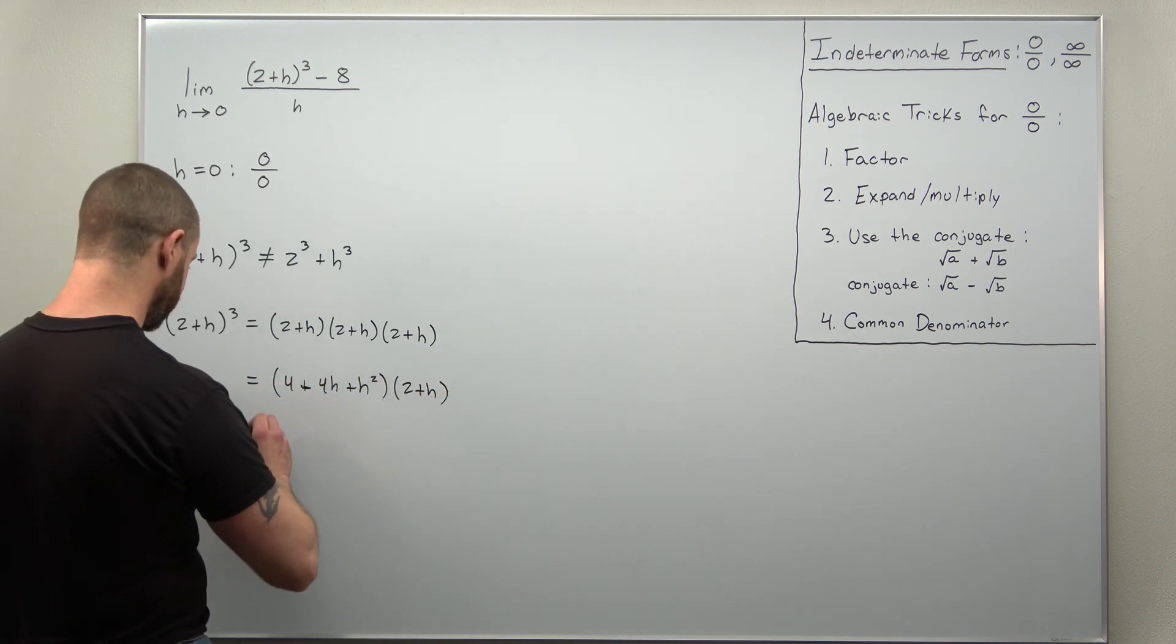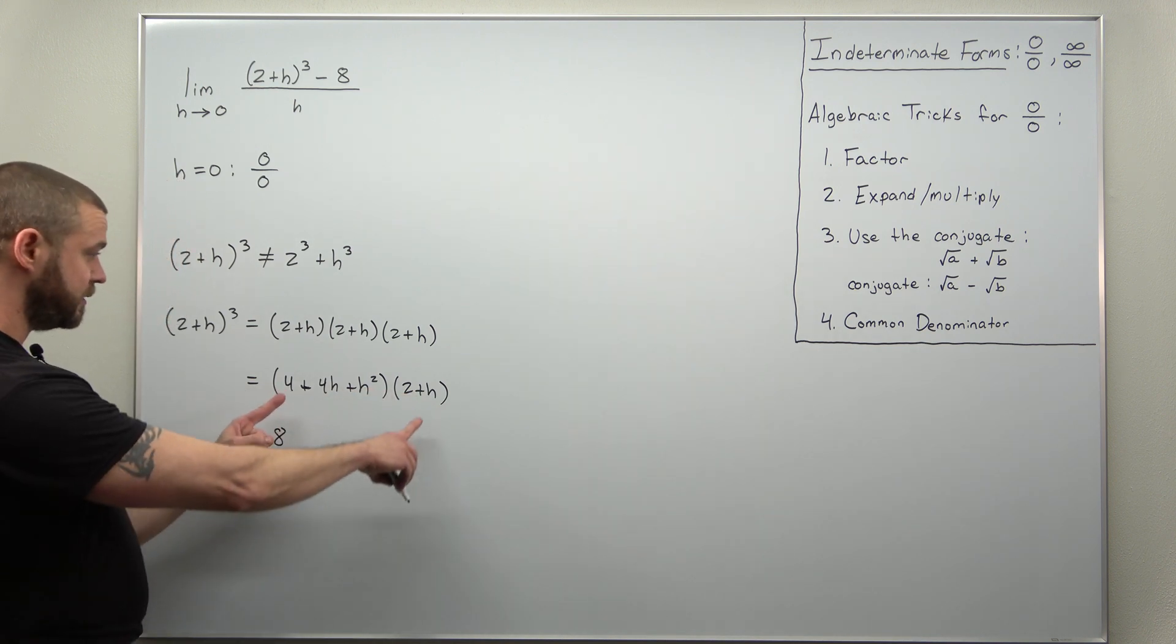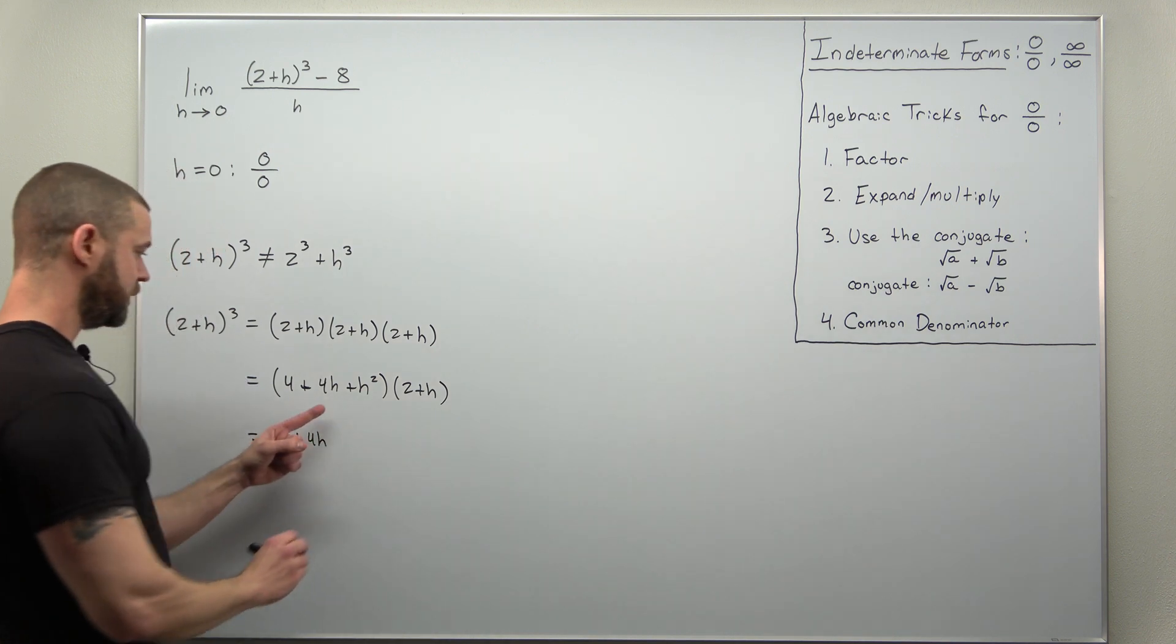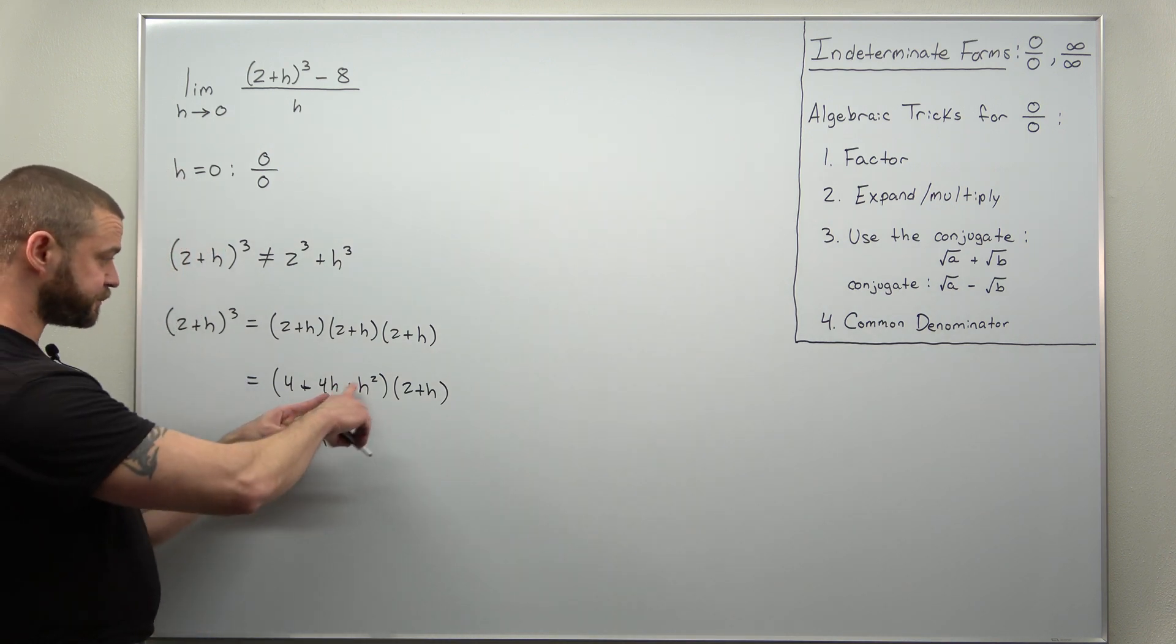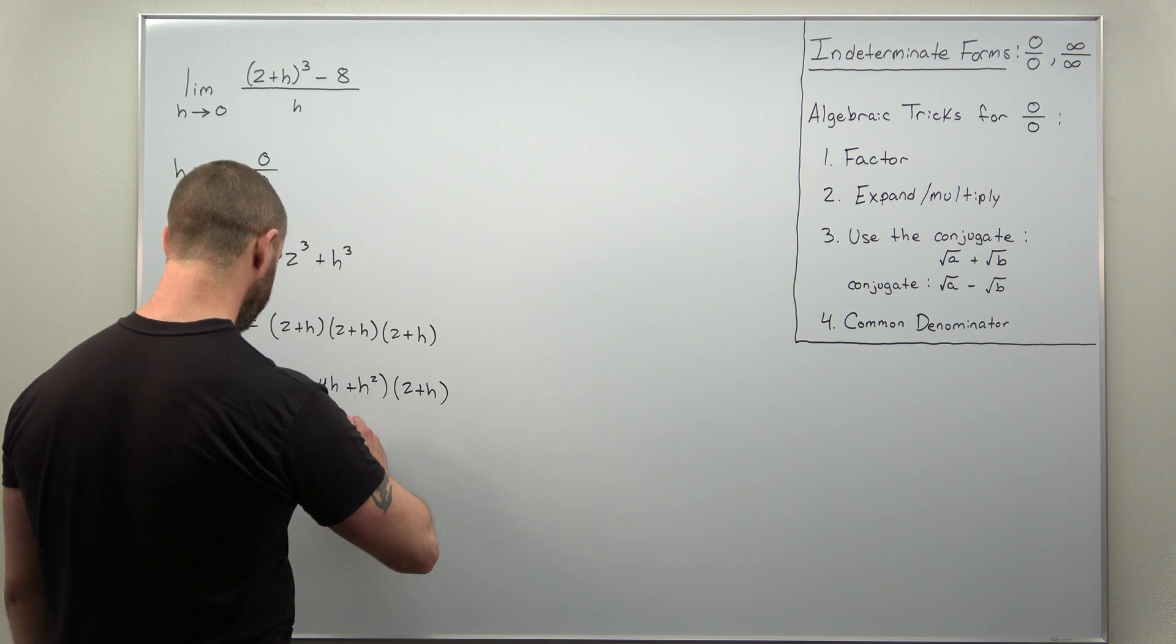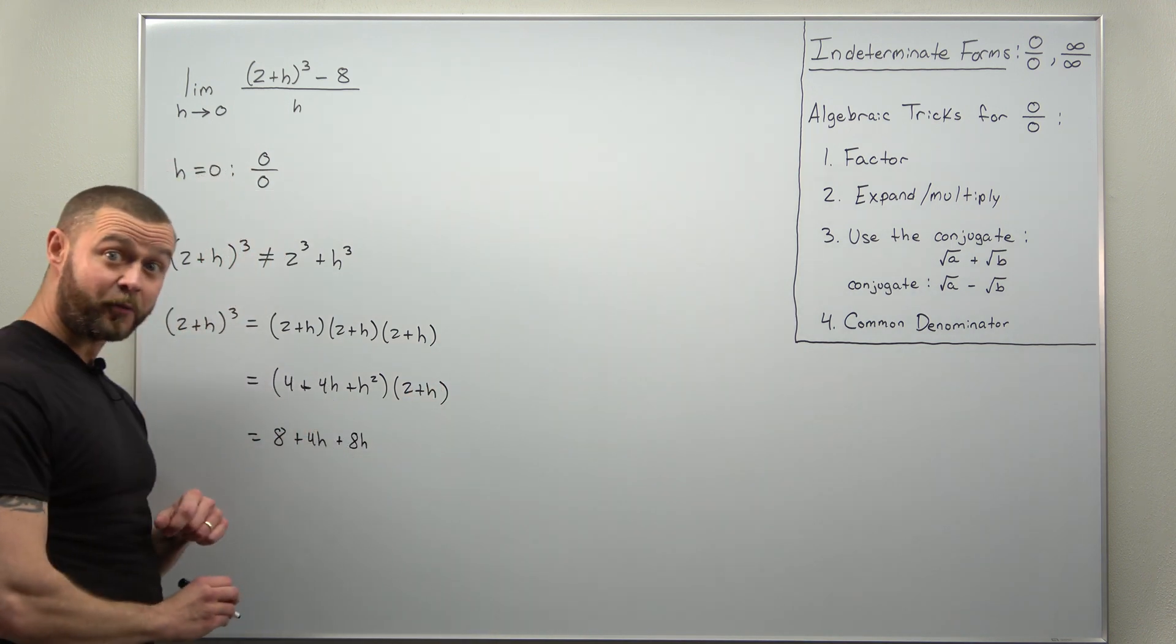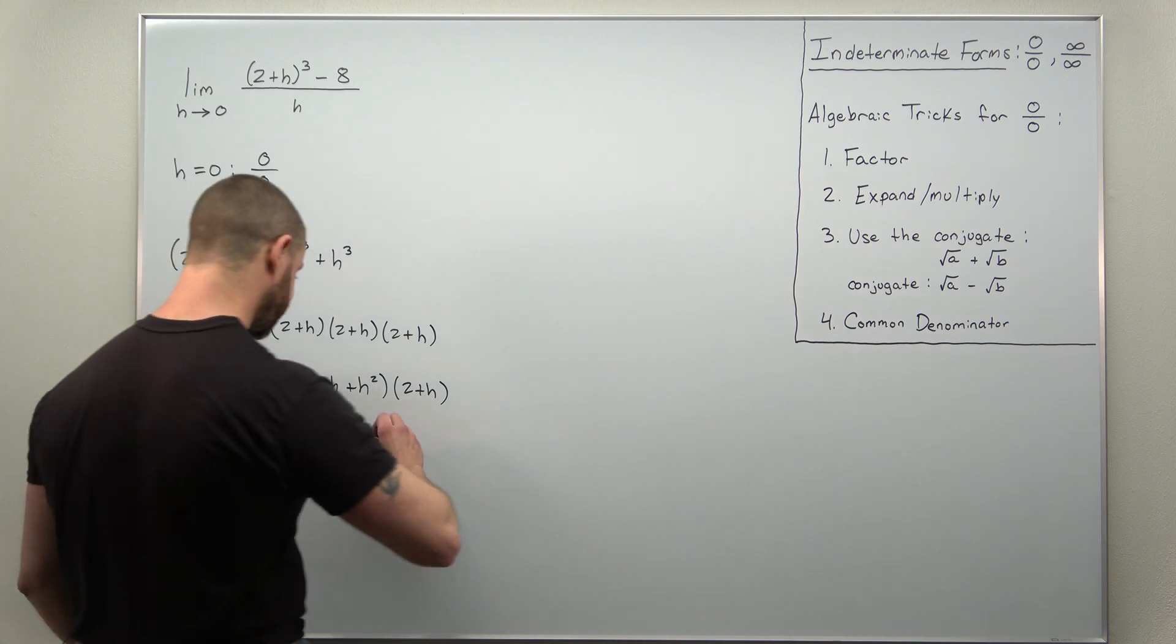So let's multiply the 4 first. We're going to get 4 times 2 = 8, 4 times h = 4h. Now we go to 4h, that's going to multiply 2 to give 8h, multiply 4h times h = 4h²,